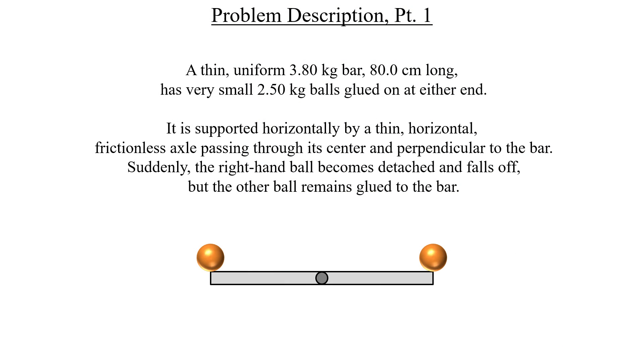Imagine a thin bar of uniform density that has a tiny glued-on ball located near both ends and in the center of the bar is a frictionless axle that allows the bar to rotate freely. Initially everything is perfectly balanced and nothing is moving but at some point the ball on the right will become loose and fall off which causes the bar and the other remaining ball to rotate kind of like this.